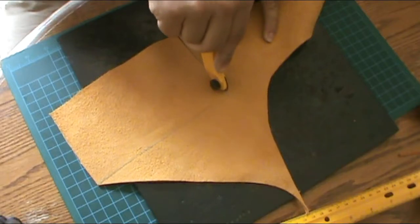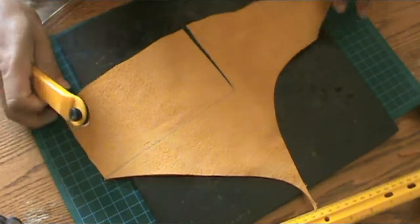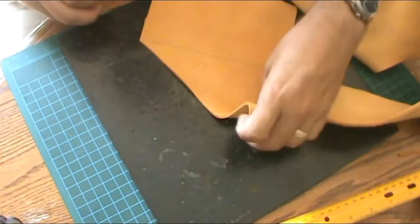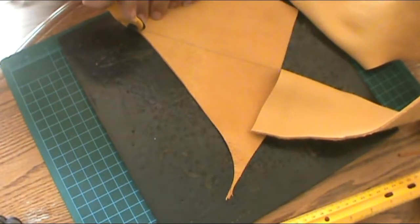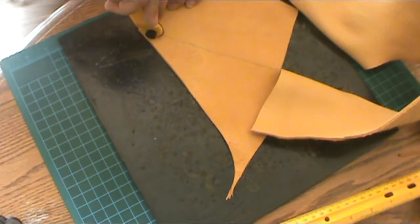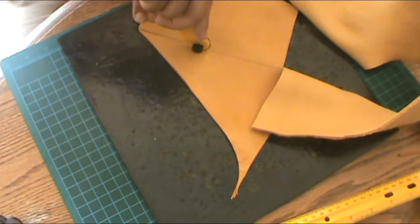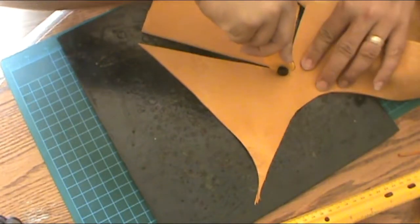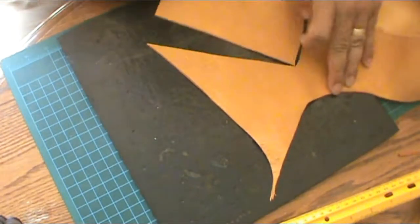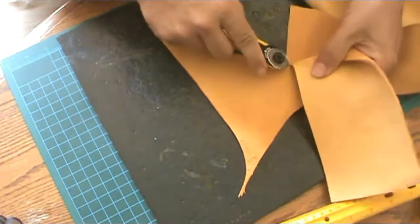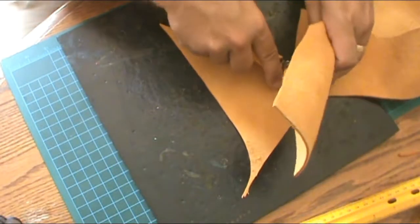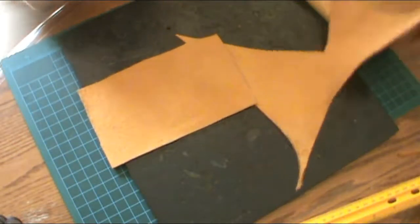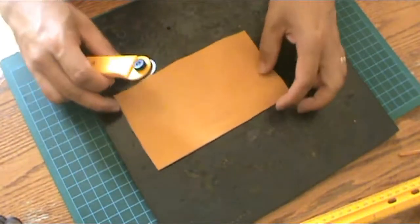Underneath this leather I've got a rubber board, so I'm not cutting into the table. And underneath that is actually another mat. It doesn't need to be there right now, it's just kind of a handy place to have it. Okay, there we have it. It's our piece of leather that we'll be working with.